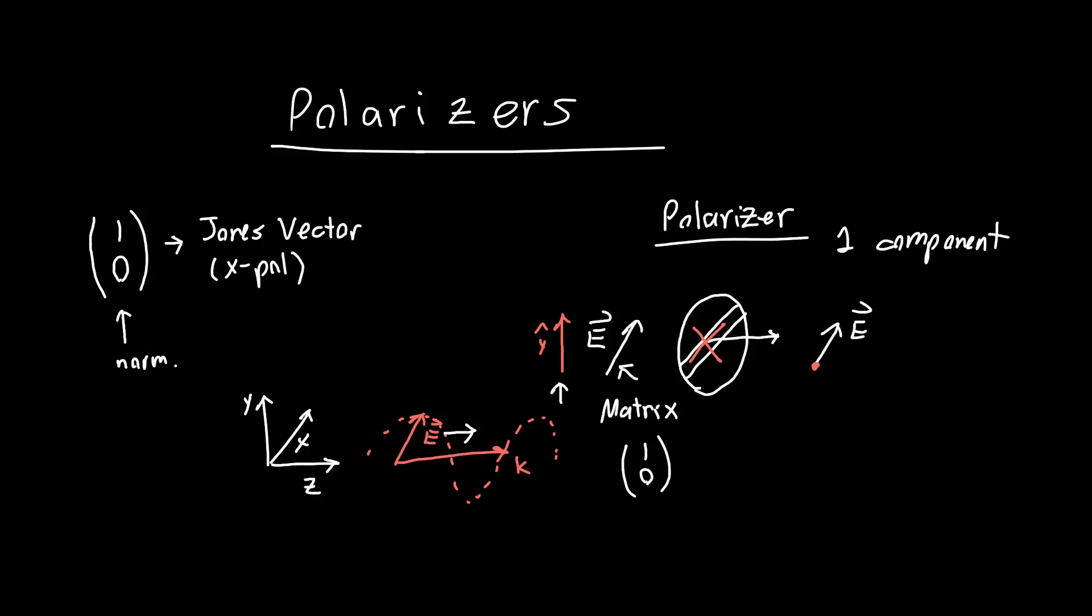Say we have our Jones vector for x polarized electric field. We know that it's going to be completely passed through by the polarizer, so it's not going to do anything. It's going to enter as (1,0) and emerge as (1,0).